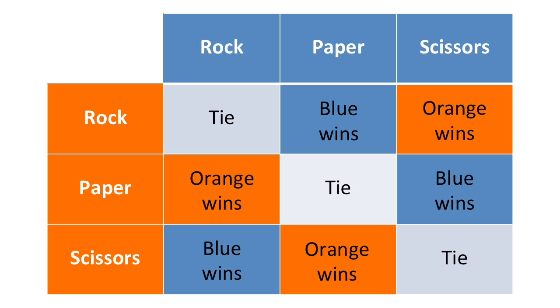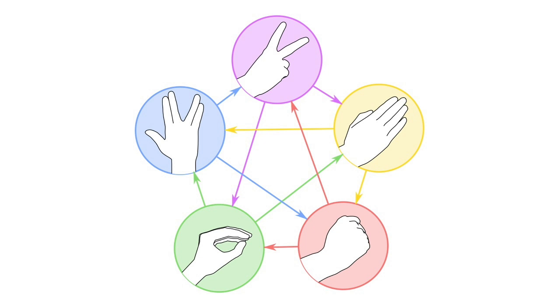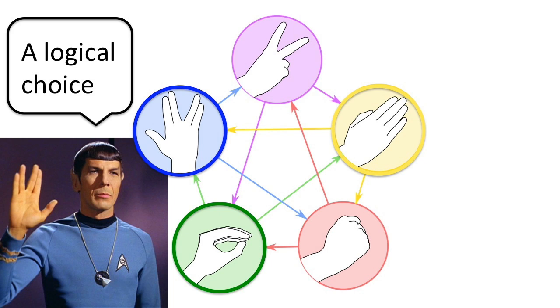Rock-paper-scissors can end in a tie one-third of the time. To lower this annoyance, play the five-weapon game Rock-Paper-Scissors-Lizard-Spock. Notice how each weapon, for example Spock, beats two and loses to two.